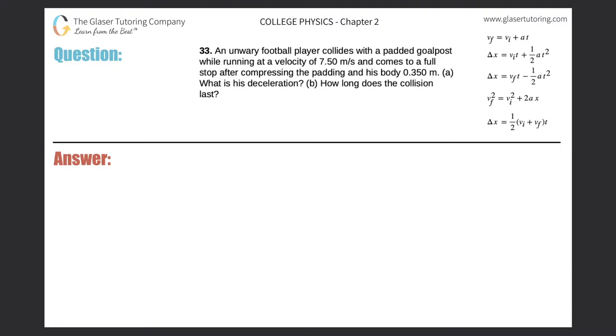Number 33. An unwary football player collides with a padded goalpost while running at a velocity of 7.5 meters per second and comes to a full stop after compressing the padding and his body by 0.35 meters. What is his deceleration?